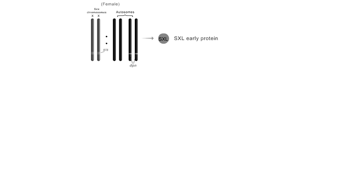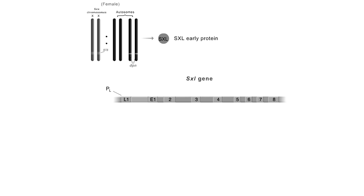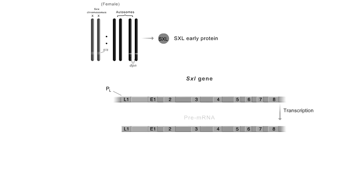Later in embryogenesis, SXL is transcribed constitutively from a more upstream promoter, the late promoter or PL. In all cells, regardless of the X to A ratio, the pre-mRNA transcribed from this promoter consists of 9 exons: L1, E1, 2, 3, 4, 5, 6, 7, and 8. Exon 3 contains a stop codon.